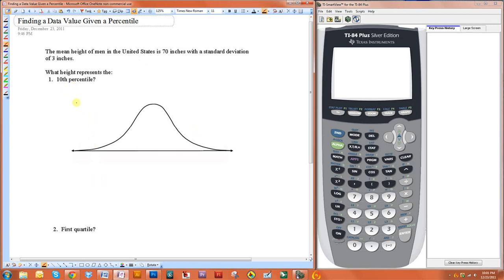In this example we want to find a data value given a specific percentile. Let's look at the example of men's height. The mean height of men in the United States is 70 inches with a standard deviation of 3 inches.